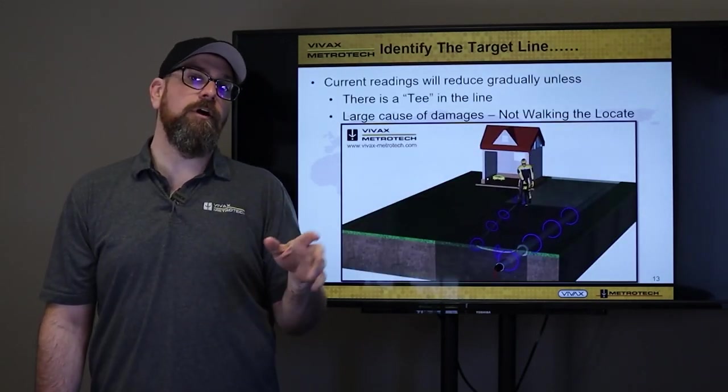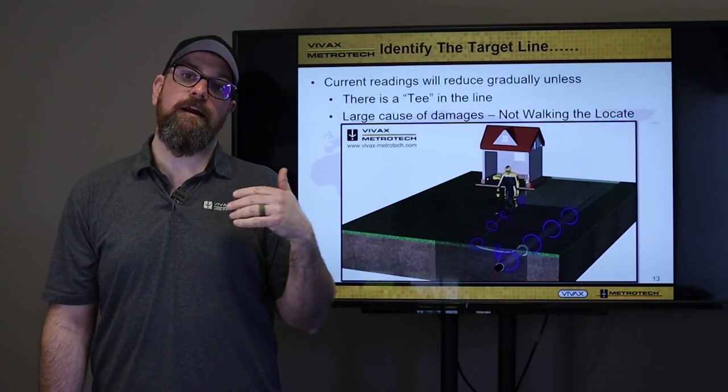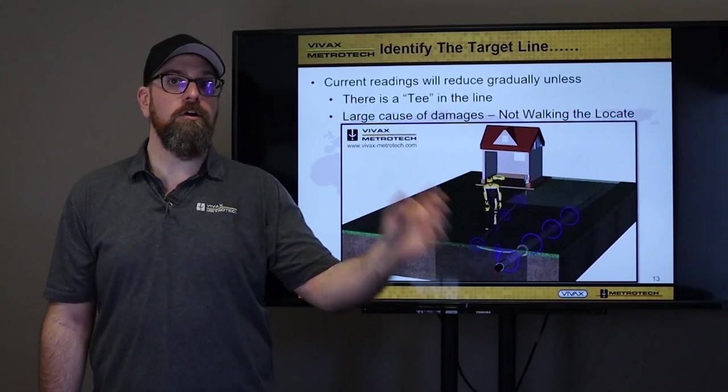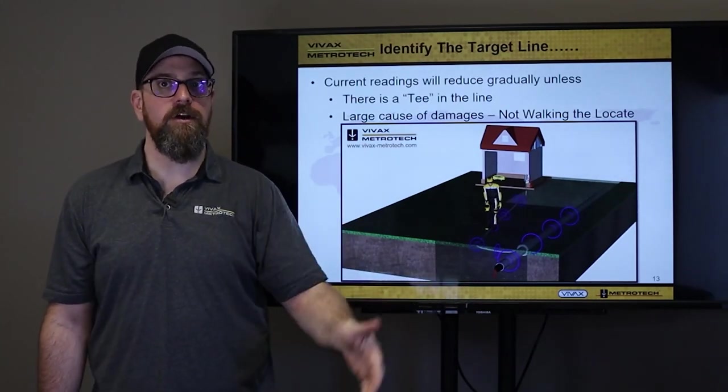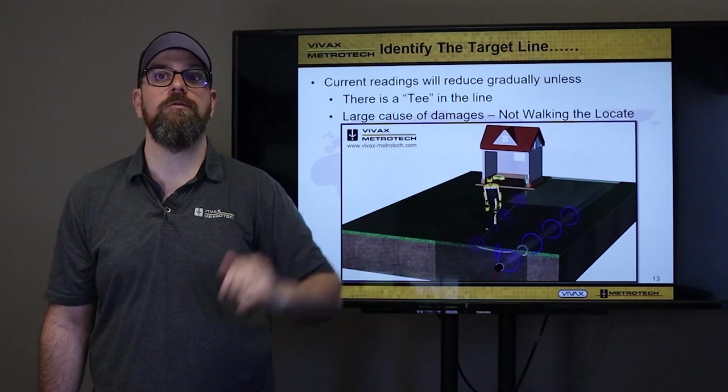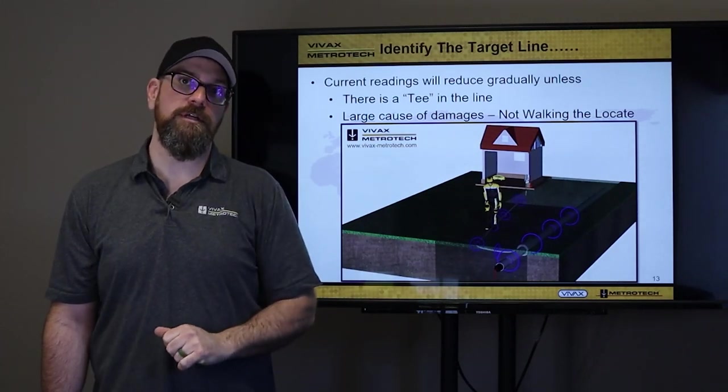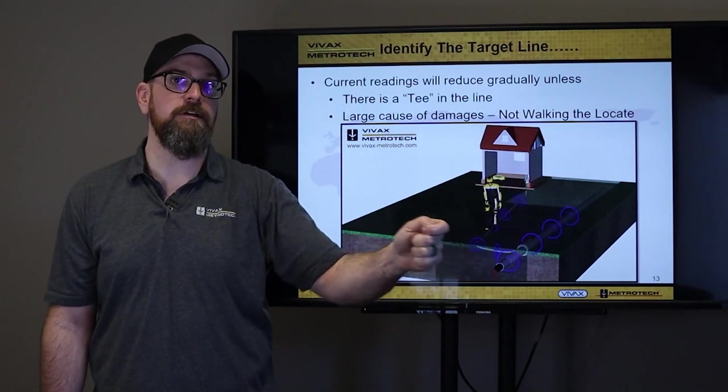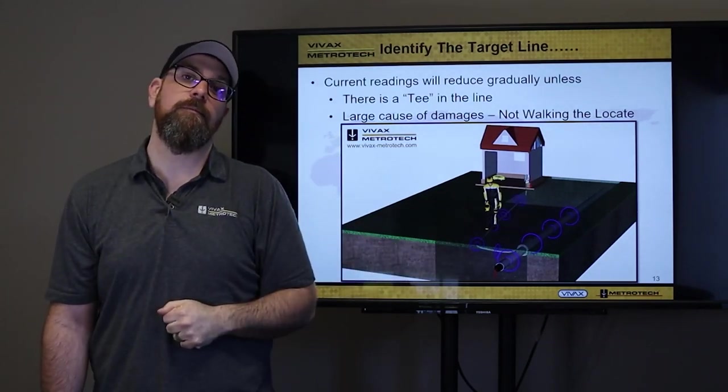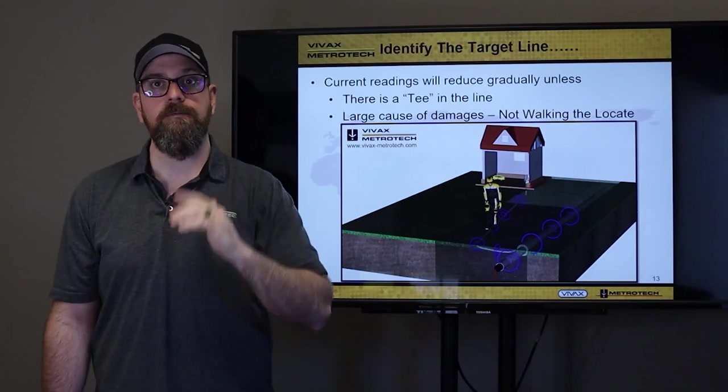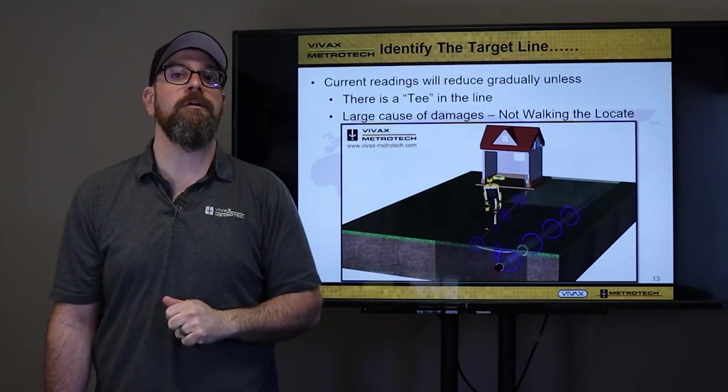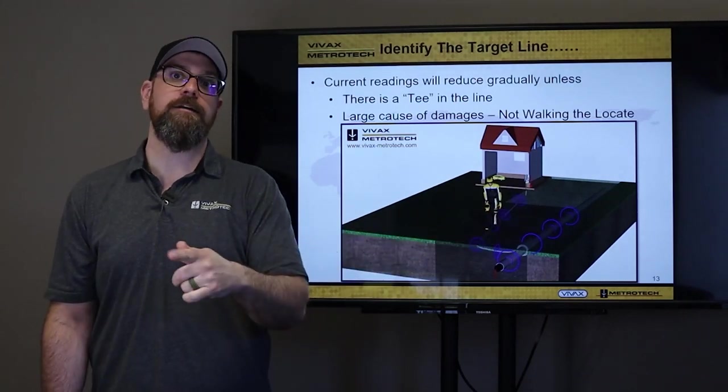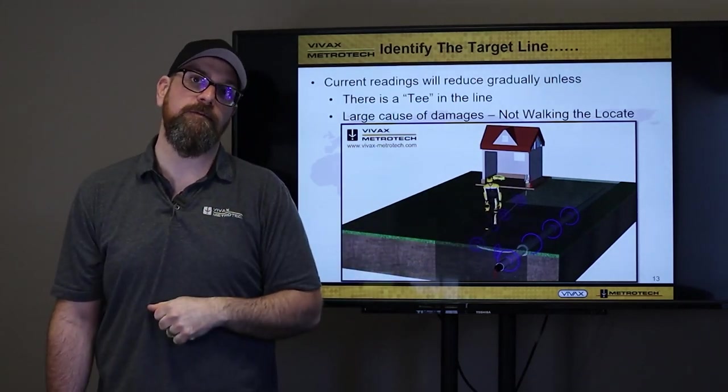Now, number one problem that I come across, and that has the number one cause of damages, is not walking the locate. Hook your transmitter up, and start from that connection point, and walk to where your locate is supposed to happen. A lot of damages happen because you hook up the transmitter, and walk directly to where the locate's supposed to happen, and assume that you're gonna be able to find what you've connected to. So please, make sure, hook up the transmitter, walk out from that connection point to the actual locatable area.